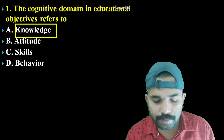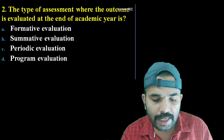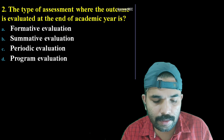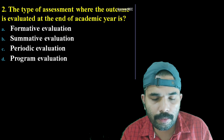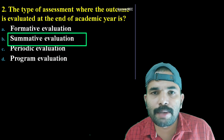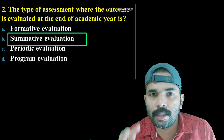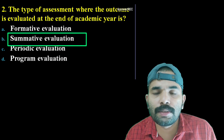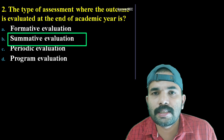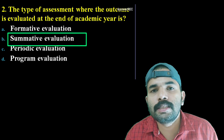Second question: The type of assessment where the outcome is evaluated at the end of the academic year is — Formative evaluation, Summative evaluation, Periodic evaluation, or Program evaluation? The correct answer is Summative evaluation. Exams conducted during the curriculum period are Formative evaluation; the year-ending exam is Summative evaluation.